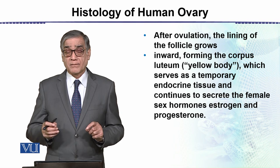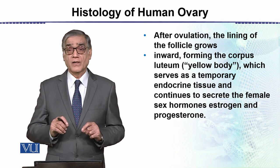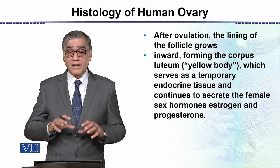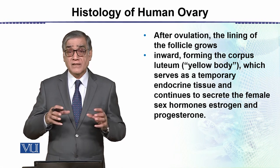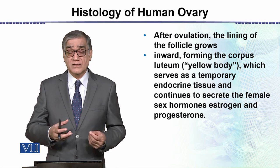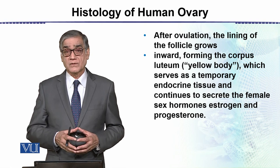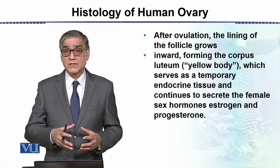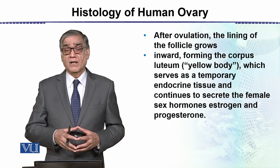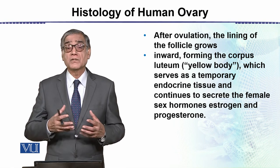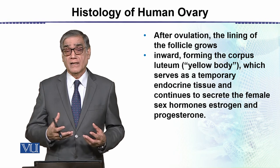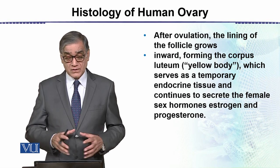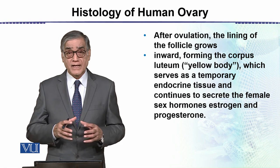Estrogens are produced by the developing follicle as it develops over time, while progesterone is the hormone produced after ovulation. The Graafian follicle is transformed into a glandular structure called the corpus luteum, which produces progesterone — a very important hormone for pregnancy.